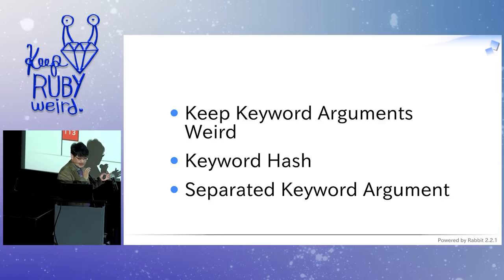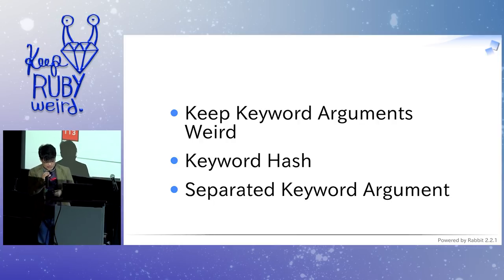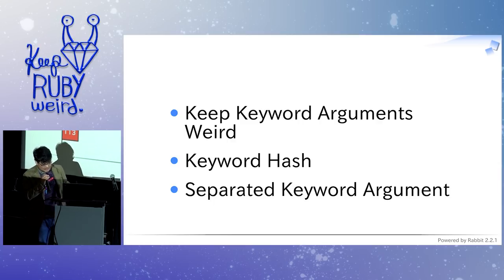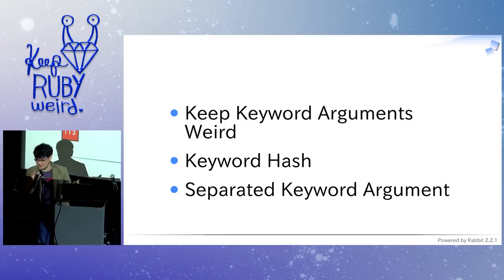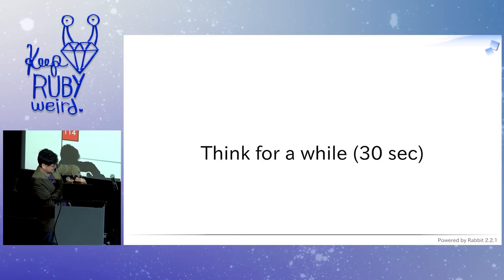So we have three options as I explained: keep current behavior as it is; introduce keyword hash to distinguish keyword arguments from normal arguments; and separate keyword arguments altogether by fixing the language itself. They all have trade-offs. Think about them for 30 seconds.